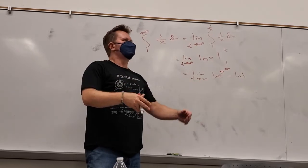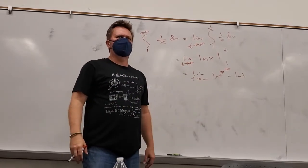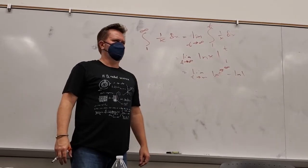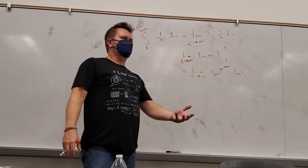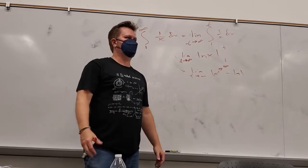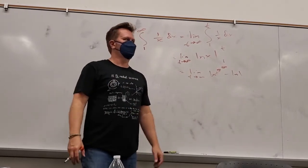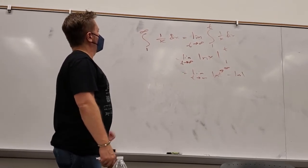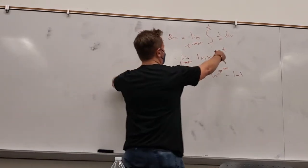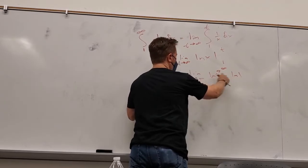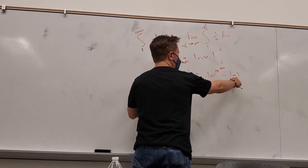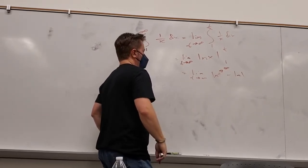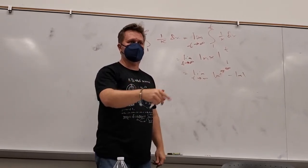If the limits were switched — say going from infinity down to 1 — you'd put t in second and get negative infinity. Either way the integral diverges. You can diverge to negative infinity or to positive infinity. The key point: don't plug infinity into your expression. The limit tells you what happens as t approaches infinity.